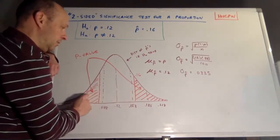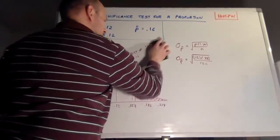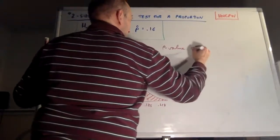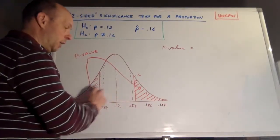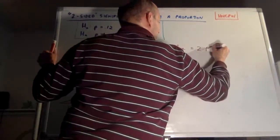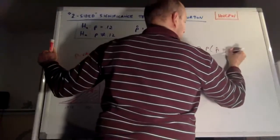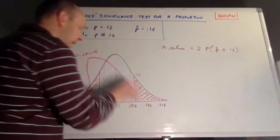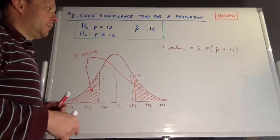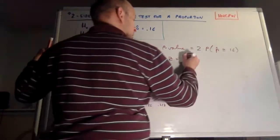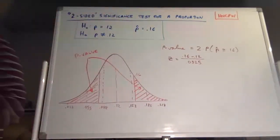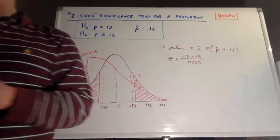The logic is we're finding the probability of being at least four percentage points away from 12 in either direction — that's two-sided. Since the two tail areas are exactly equal, the P-value is two times the probability that P-hat ≥ 0.16. So our Z-value is: Z = (0.16 − 0.12) / 0.0325. Let's calculate that. We get Z = 1.23.